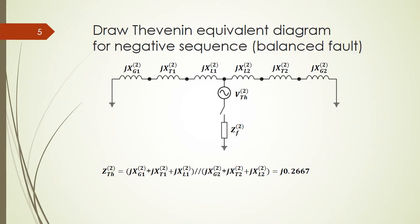Next we look at the Thevenin equivalent diagram for the negative sequence in the balanced circuit. The only difference is that the reactance values are the negative sequence x values, which are different from the positive sequence. Applying the same parallel calculation, we obtain the Thevenin impedance Z-Thevenin for the negative sequence network.